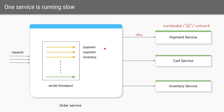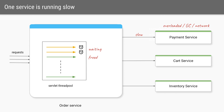Now let's say one of the services that the order service talks to — in this case the payment service — becomes slow. The payment service will not be able to quickly return the response to the order service. All the threads calling the payment service will be waiting for a while for it to return a response. Let's say the other services like the cart service and inventory service are not facing the same issue, so any threads calling them will do their job very quickly and become free very quickly.